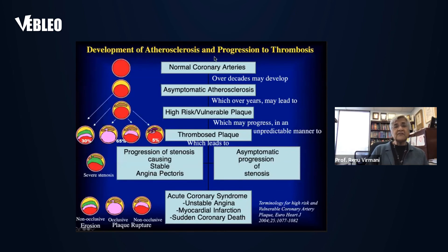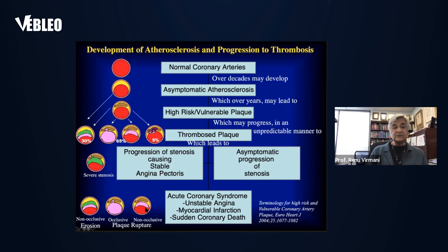The development of atherosclerosis and progression to thrombosis: a normal artery progresses through asymptomatic atherosclerosis over years, potentially leading to high-risk vulnerable plaques that may progress unpredictably. They may thrombose asymptomatically — just causing progression of stenosis — or symptomatically, causing stable or unstable angina pectoris, or acute coronary syndrome including unstable angina, myocardial infarction, and sudden death.